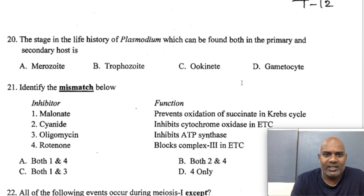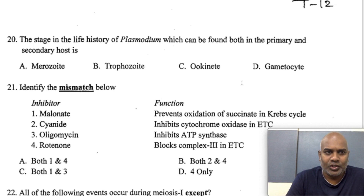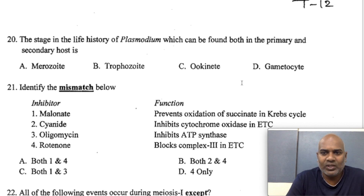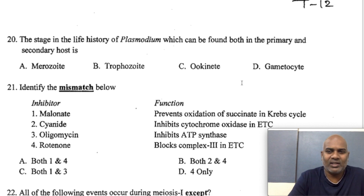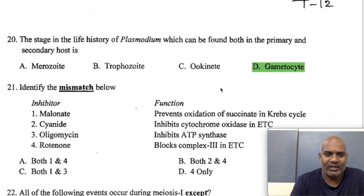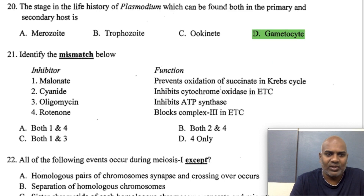The stage in the life cycle of Plasmodium which can be found both in the primary and secondary hosts — it's a tricky question, but the answer is gametocyte.